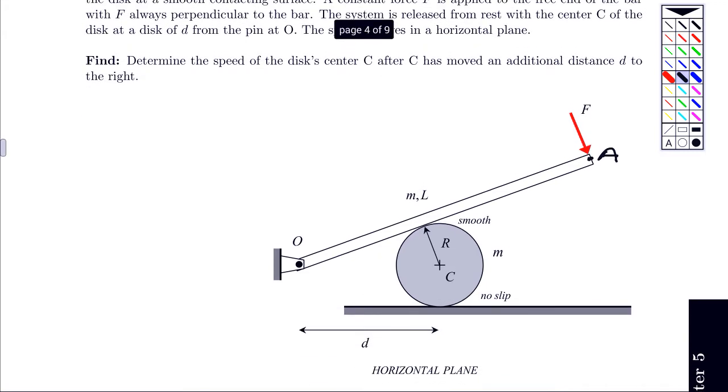The disc is in contact with the fixed horizontal surface at this point which I will label as E, no slip there. It's in contact with the bar OA at this point which I'm going to label as F.